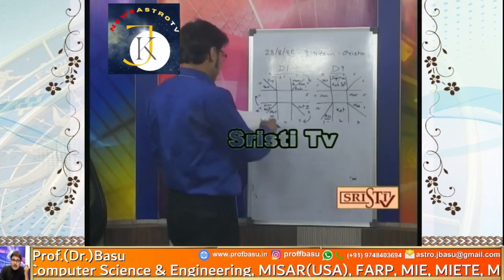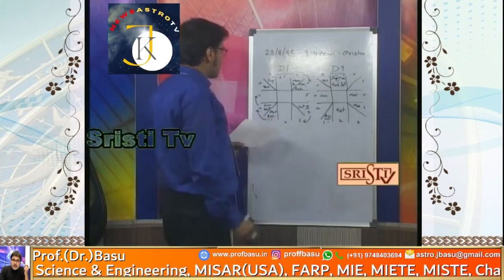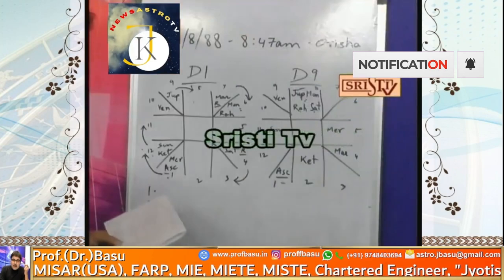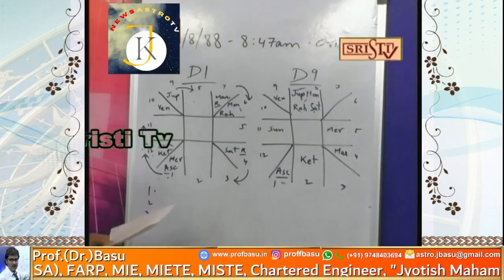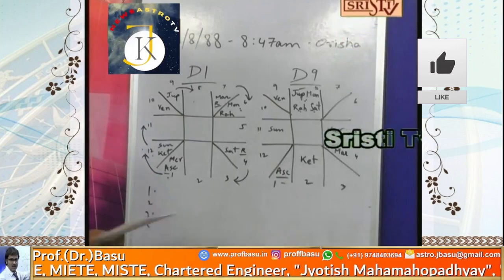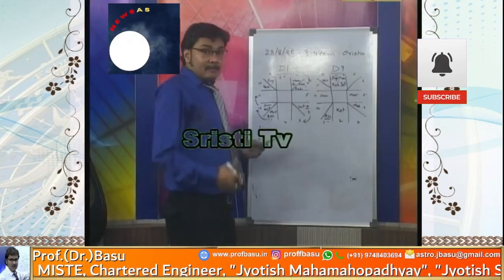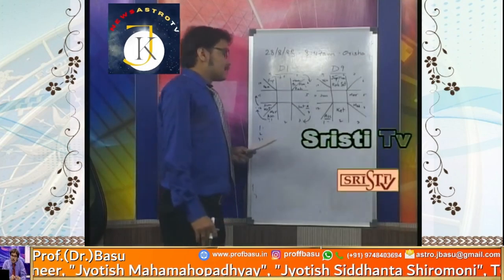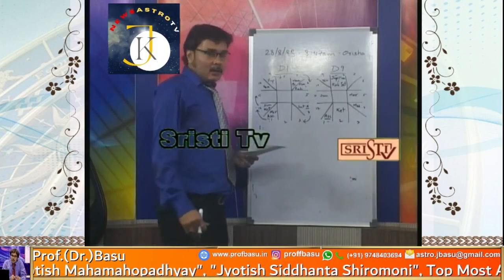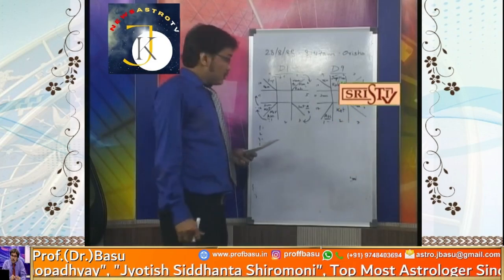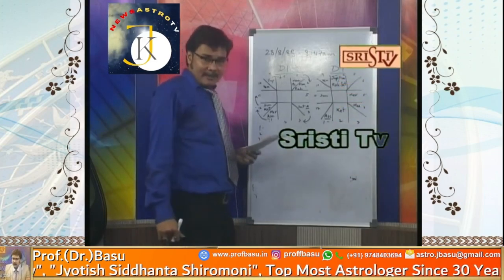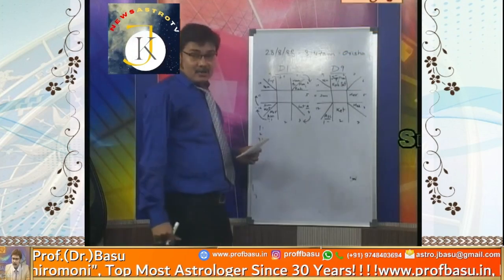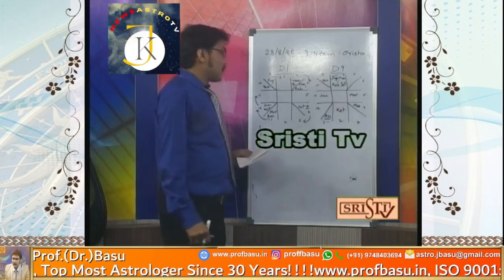Lastly, Mars is under the Nakshatra of Mercury and is retrograde. This signifies different bleeding episodes at different times. The native may face bleeding, which may come from accidents or other phenomena — but episodes of bleeding will occur at various times. This is confirmed in both the D1 and D9 charts.